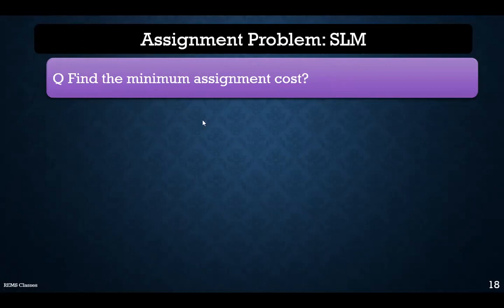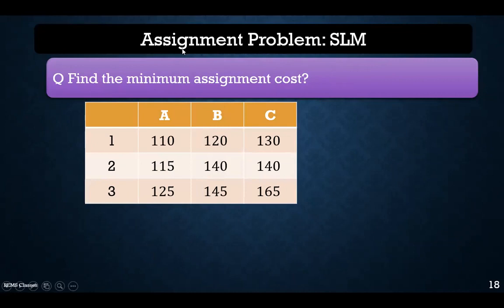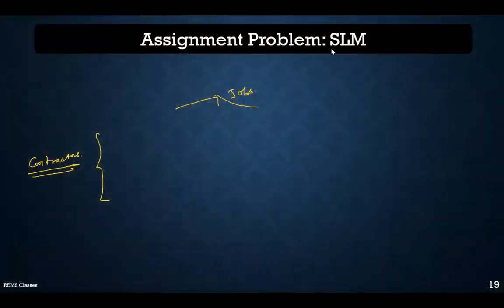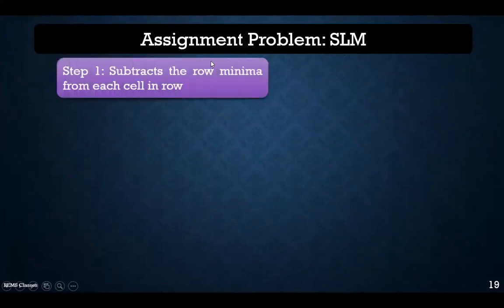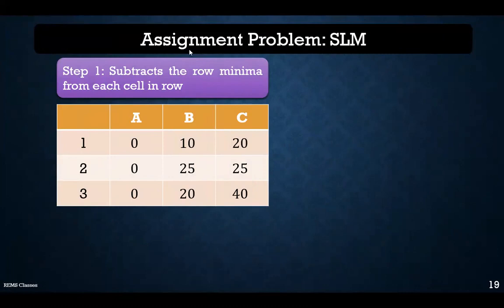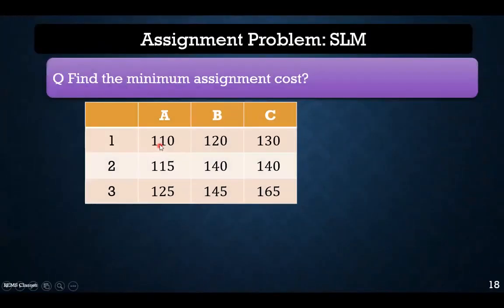We have a new example to illustrate this technique. We have three different jobs and three different contractors. The row minima are: for the first row, 110; for the second row, 115; and for the third row, 125. We will subtract these values from each cell in their respective rows to perform the row transaction.